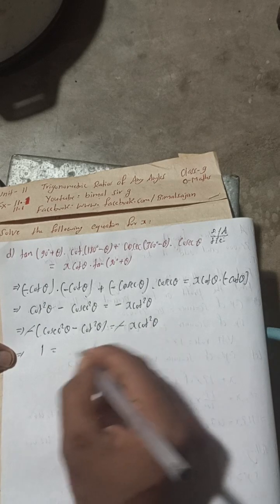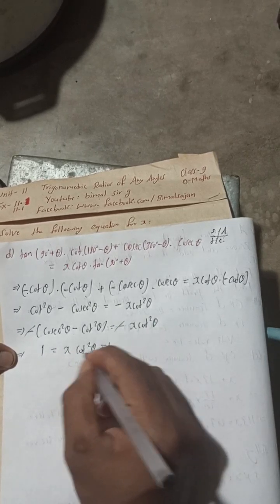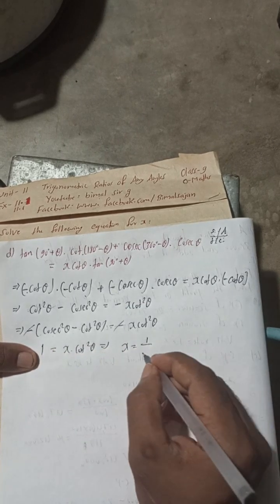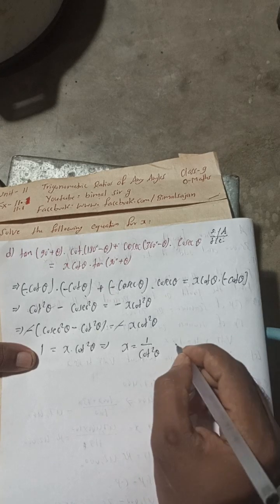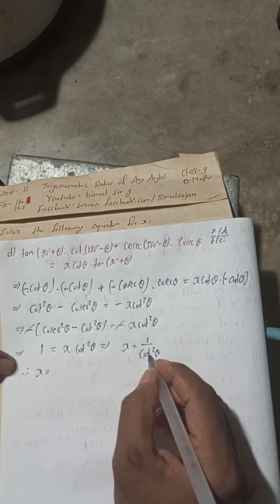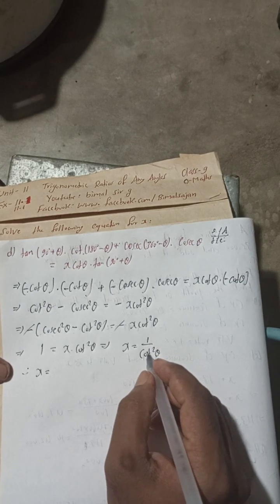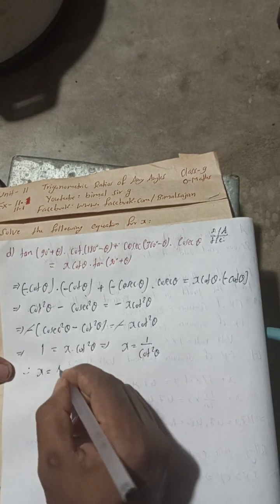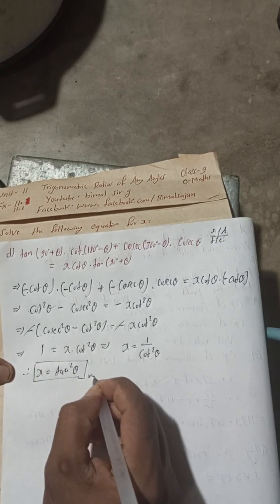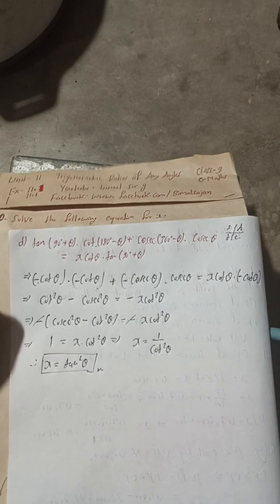This implies x = 1/cot²θ. Since 1/cot²θ = tan²θ, therefore x = tan²θ. This is the solution for question 10d.